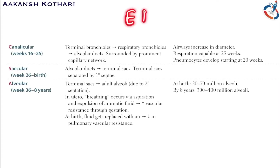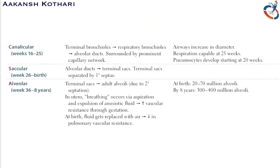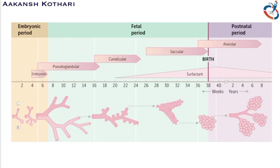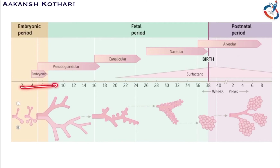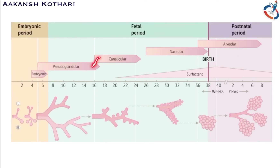A diagram provides a brief overview of the embryonic, pseudoglandular, canalicular, saccular, and alveolar phases, including surfactant formation at the various weeks. Many of these phases overlap each other, and the diagram gives a clear demarcation of each phase and its timeline.